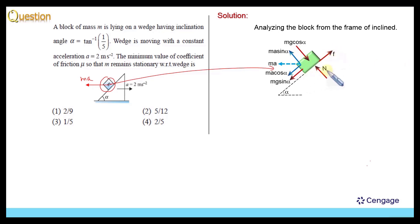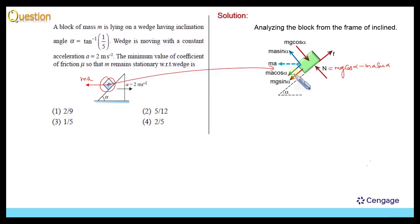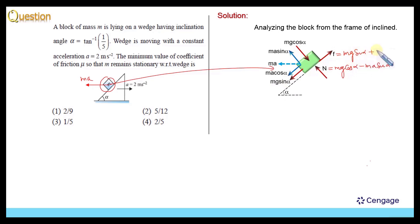Now we can write the normal reaction. The magnitude of the normal reaction should be equal to MG cos α minus MA sin α. Now, since the block is not sliding, the upward force will be balanced by the downward force. So we can write: f = MG sin α + MA cos α.